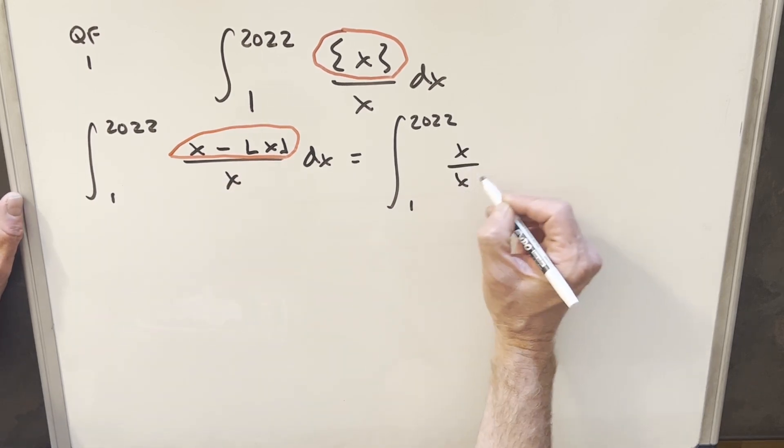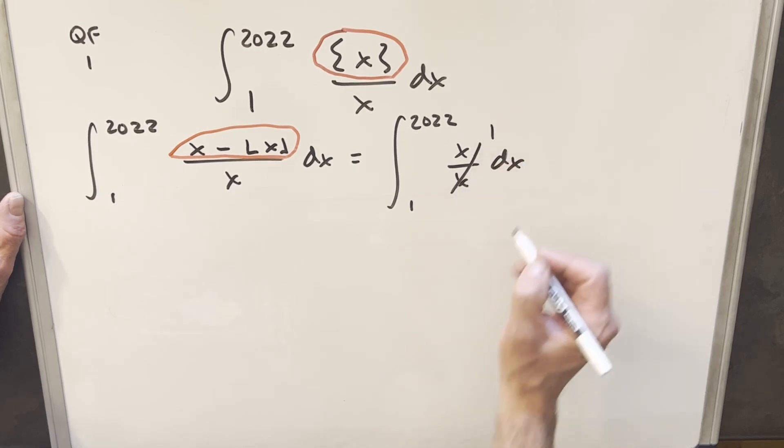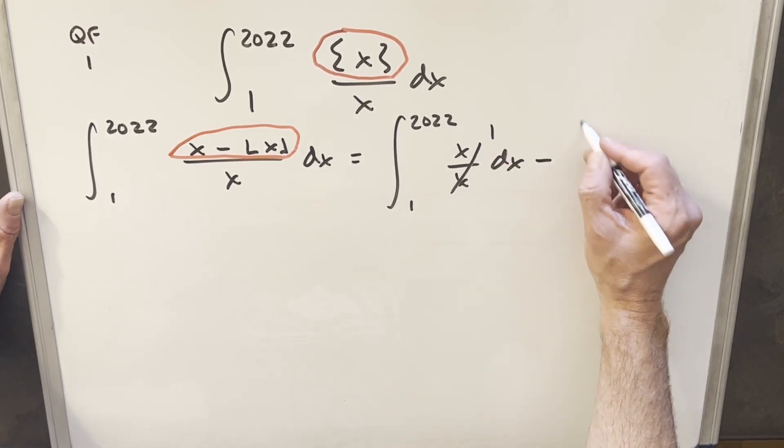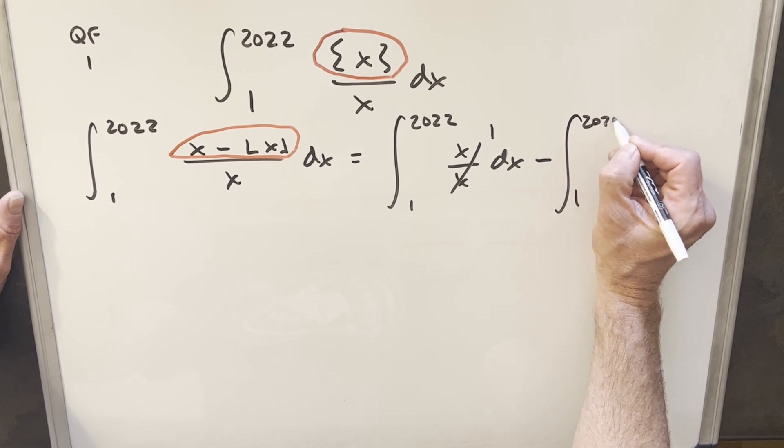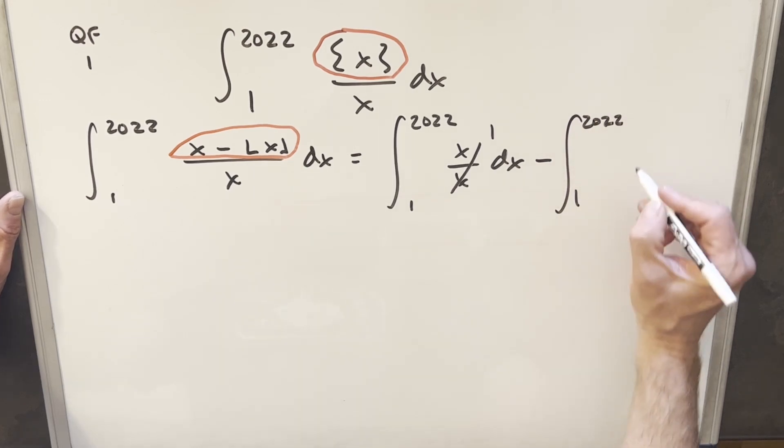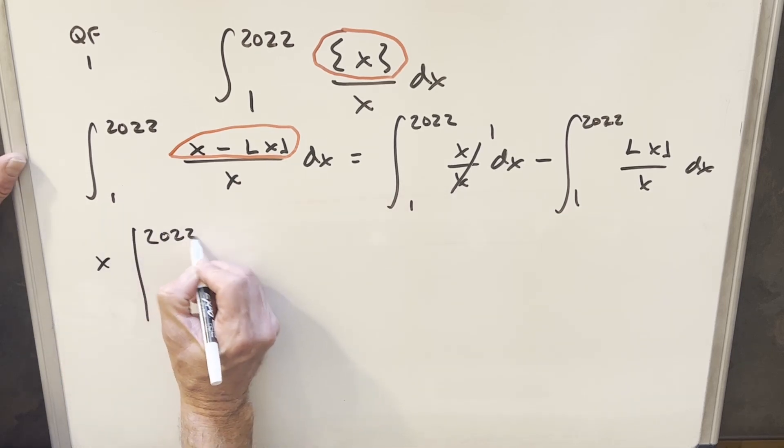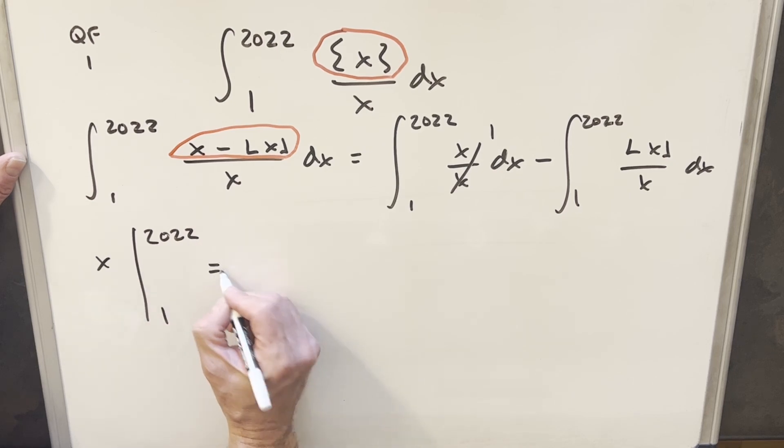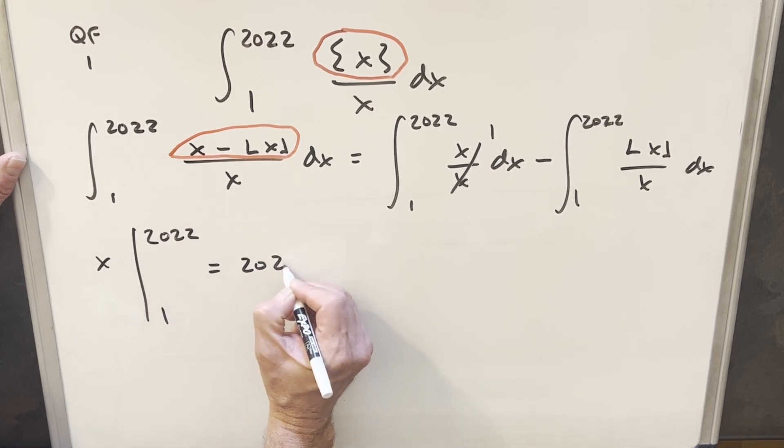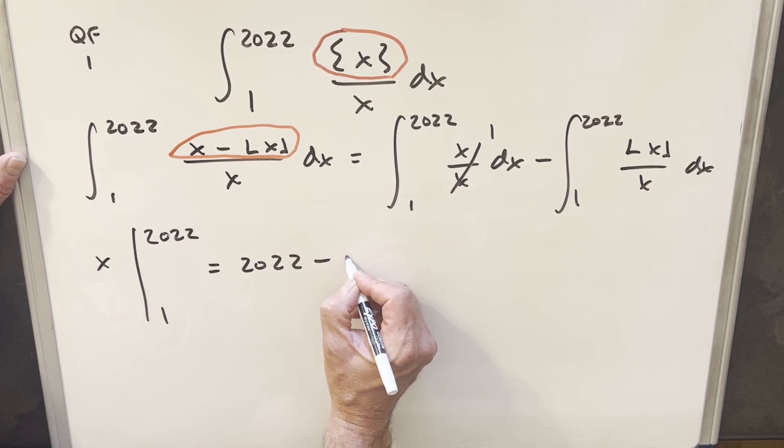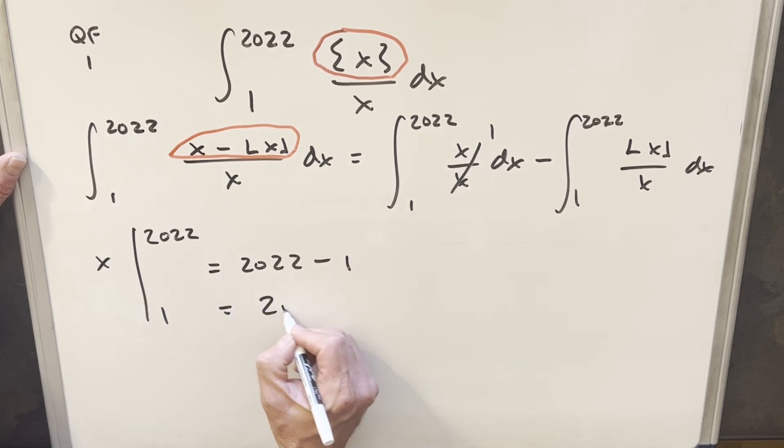So for the first one, it's going to be x over x dx. But of course, that's going to cancel to 1. And then for the second one, we're still going to have this floor function to deal with over x dx. Well, this first integral is really simple because we're just integrating 1. We integrate that, we get x. And we're evaluating x from 1 to 2022. So this is going to give us 2022 minus 1 or 2021.